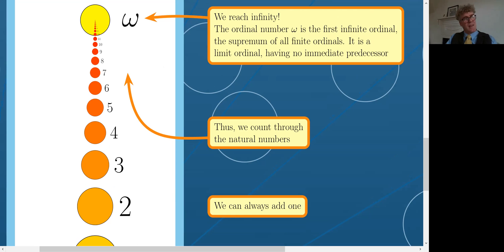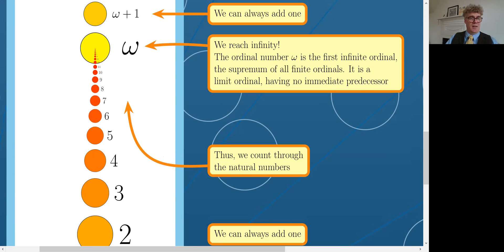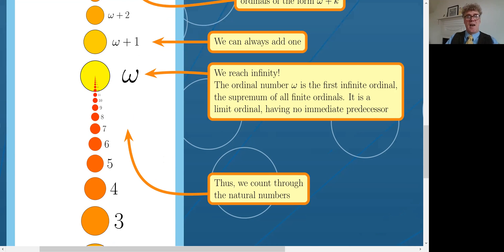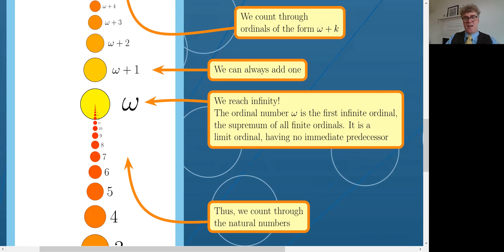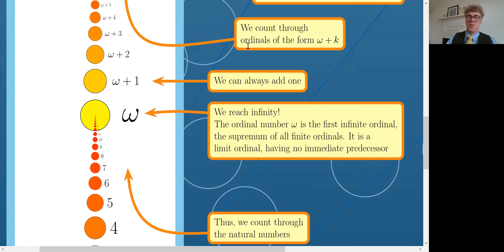But what did I say? We can always add one and so we can make the ordinal known as omega plus one and then omega plus two and omega plus three. And in that way, count through the numbers of the form omega plus k for any finite number k.